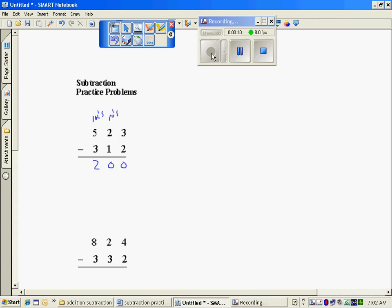Moving to the tens, 20 minus 10 is 10. Moving to the ones, 3 minus 2 is 1. I'm left with 211.